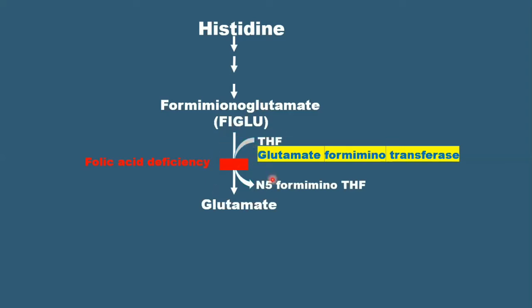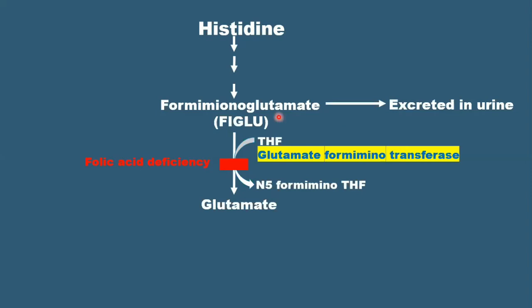This step is completely blocked, so FIGLU will not be converted to glutamate. Formiminoglutamate gets accumulated, and as it accumulates, it gets excreted in the urine.